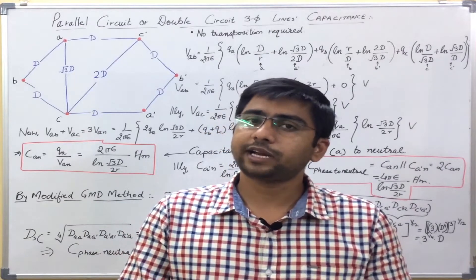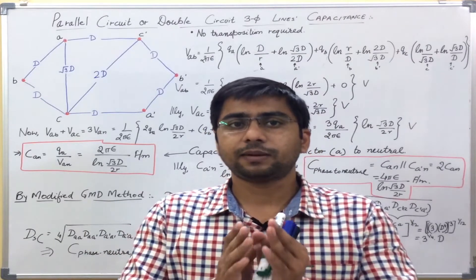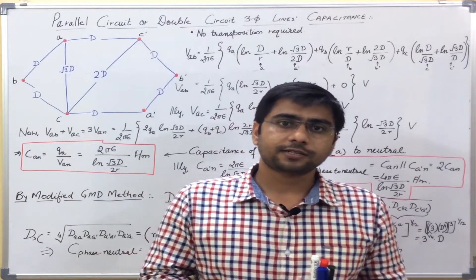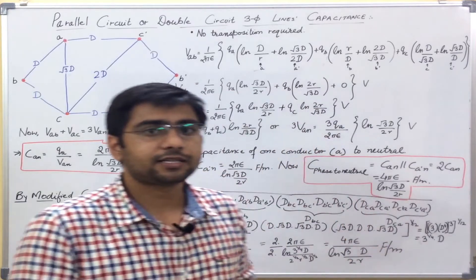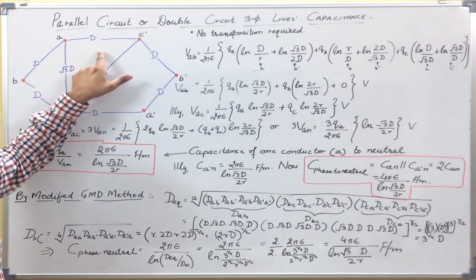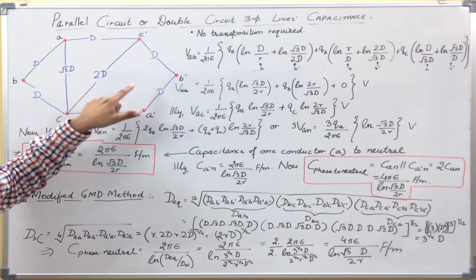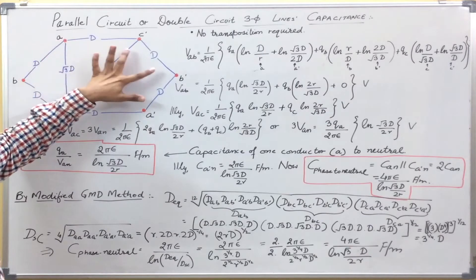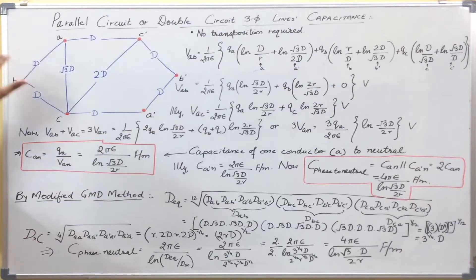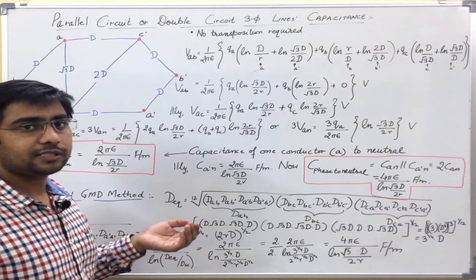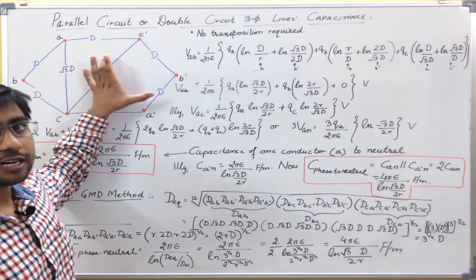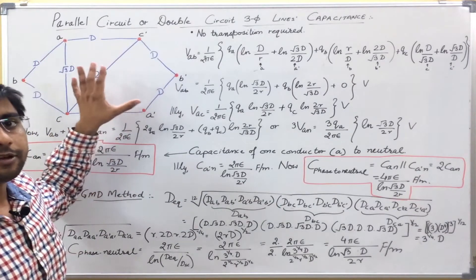Now let us see how to derive the capacitance of such a double circuit line. We will take two cases. First, I will take the hexagonally spaced transmission line — that is, the conductors are occupying the vertices of a regular hexagon where the sides of the hexagon are equal, and it is equal to capital D. Similar to our inductance concept, we will try to place similar phase conductors as far apart as possible.